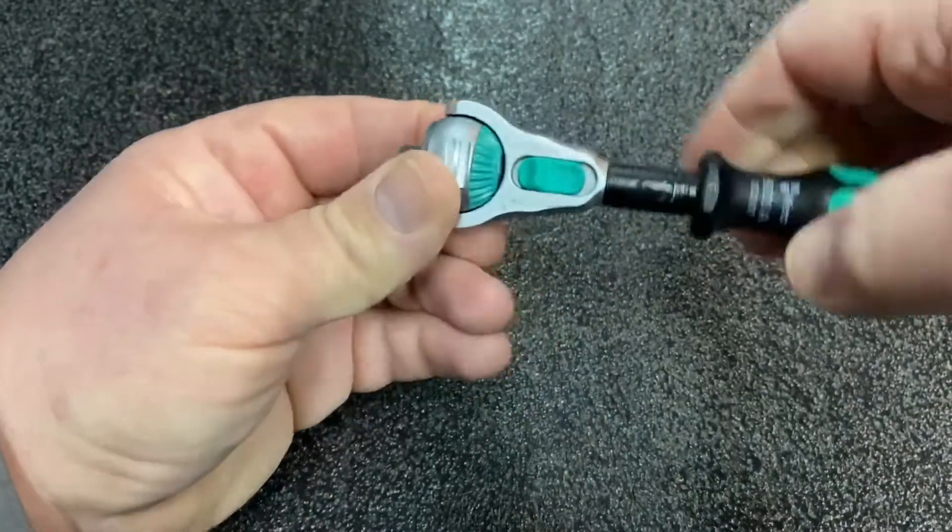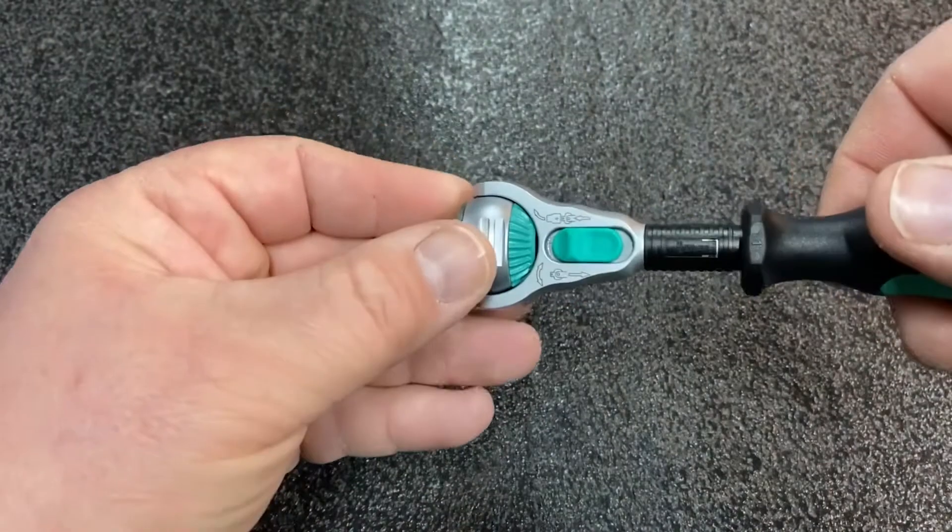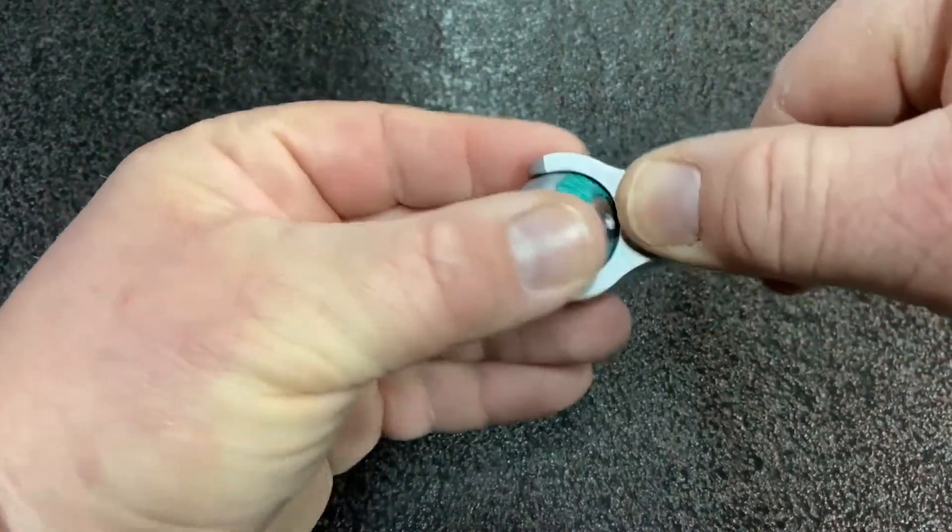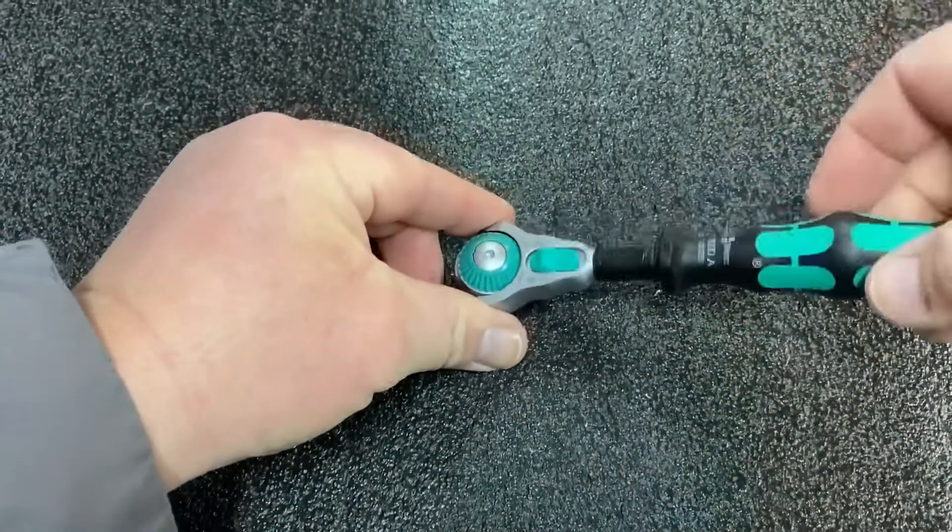Notice these notches on the side - you can position it at different angles so that when you're up close working, you're not dragging your knuckles across something. It locks in straight there too.